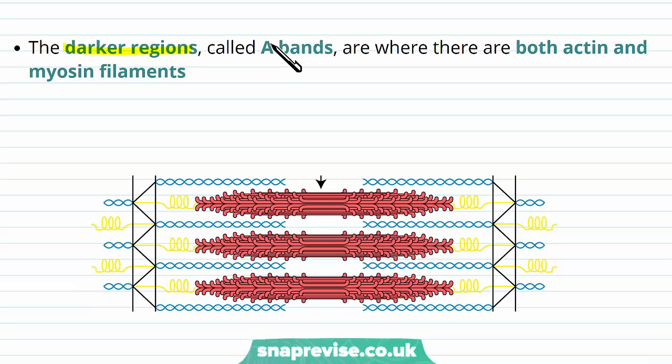However, the darker regions, which are called the A bands, are where there's both actin and myosin filaments. So if this was the I band before, as we move along we can now see that now there is this myosin protein in red, and we call this area the A band.